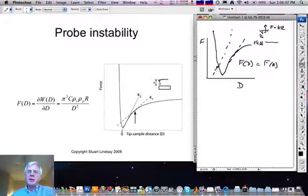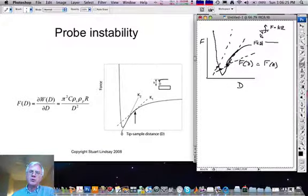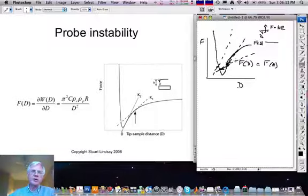If, on the other hand, the probe is not so stiff, then the slope of this f equals kx line will be small, and the solution, the crossing points, will be multivalued, meaning that once we reach this point here on this approach, the surface forces increase more rapidly than the restoring forces, and so the probe will jump into contact with the surface.